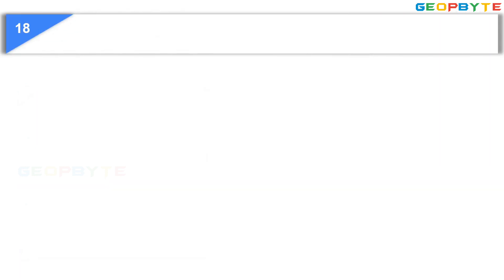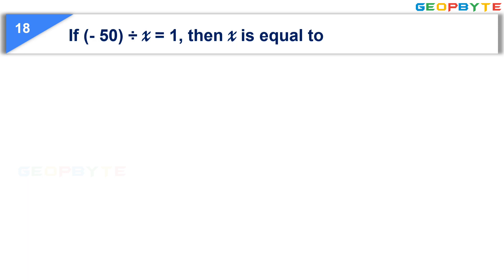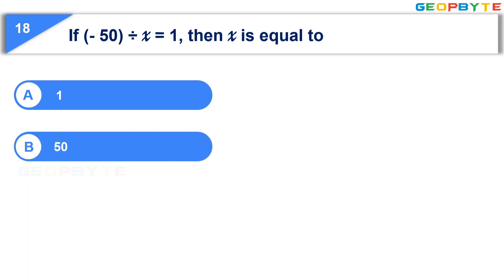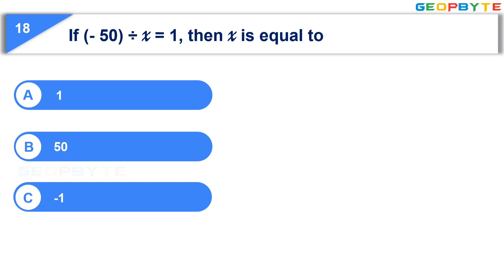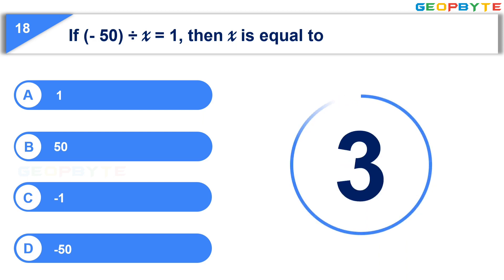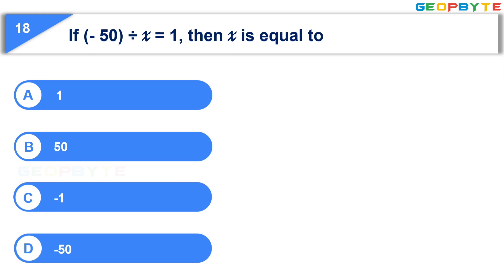The eighteenth question: If minus 50 divided by x is equal to 1, then x is equal to — Option A: 1. Option B: 50. Option C: minus 1. Option D: minus 50. Your time starts now. Your time is up. And the correct answer is Option D: minus 50.